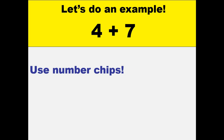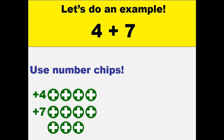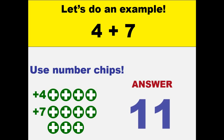Let's consider an example: 4 plus 7. Both 4 and 7 are positive, so we will be using 4 positive chips and 7 positive chips. Having those, we will have an answer of 11 positive chips, or positive 11.